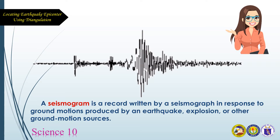A seismogram is a record written by a seismograph in response to ground motions produced by an earthquake, explosion, or other ground motion sources. By analyzing seismograms, scientists are able to record three types of seismic waves: P waves, S waves, and surface waves.